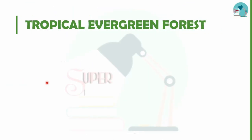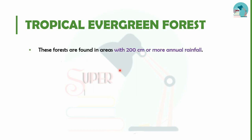Forests are classified based on landform, soil, humidity, etc. The first type is the tropical evergreen forest. In this forest, the rainfall level is above 200 cm, making it a tropical evergreen forest.